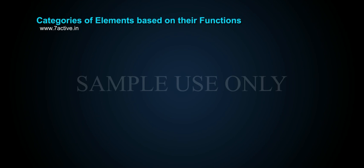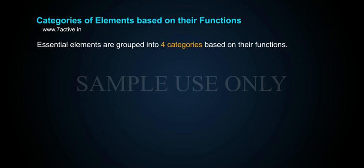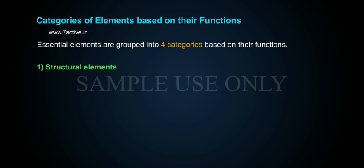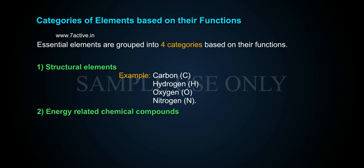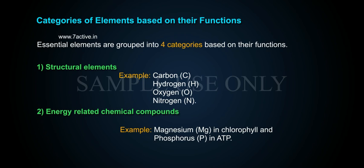Essential elements are grouped into four categories based on their functions. First, structural elements: C, H, O, N. Second, energy-related chemical compounds — for example, Magnesium in chlorophyll and Phosphorus in ATP.